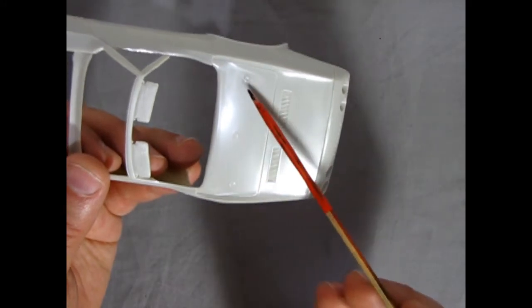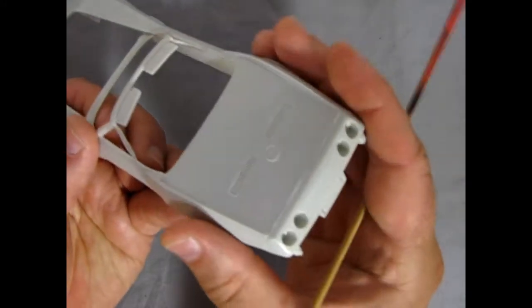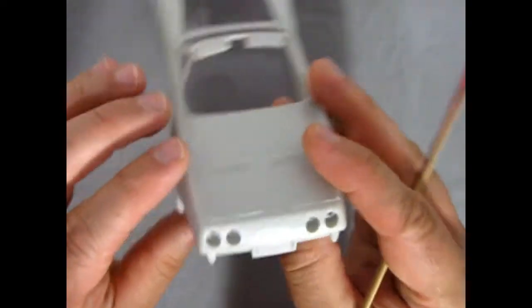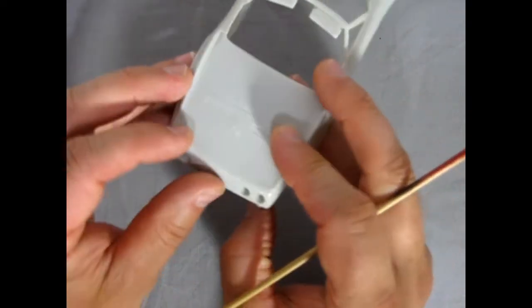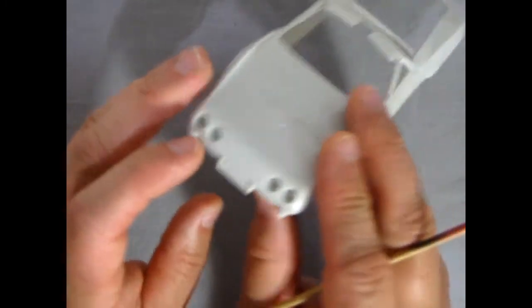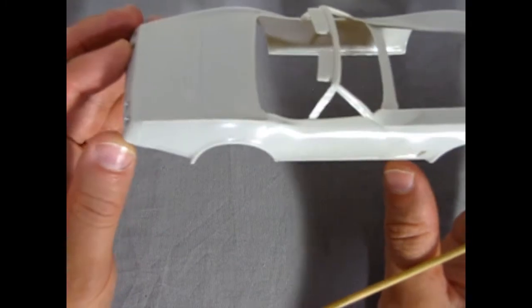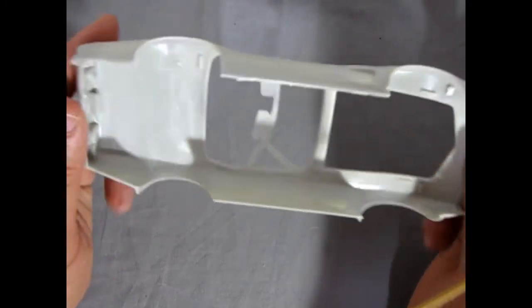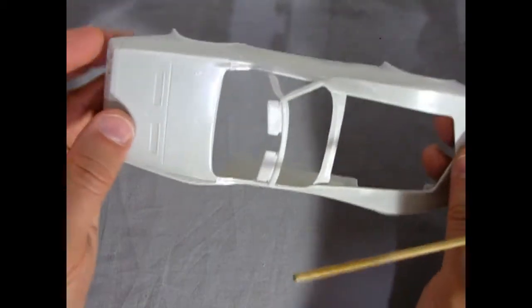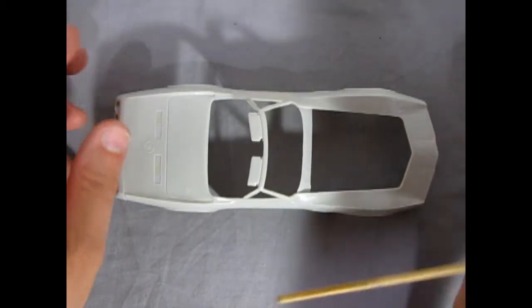You'll notice that the rear bumper is actually molded in place on the body, which is quite nice. One less thing you need to glue on. And it does look very nice in here. There's no sink marks like the 1974 AMT Corvette. Again, very nicely done. Very little mold marks in the underneath of this thing. So there's our body shell.